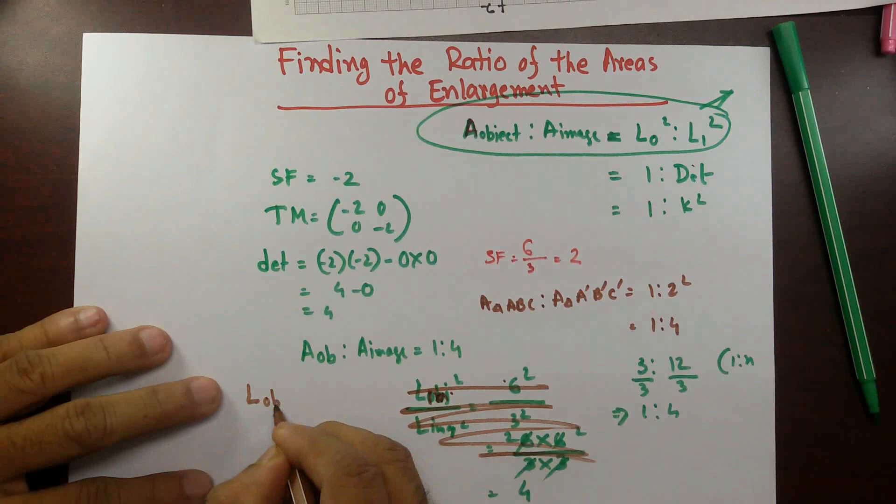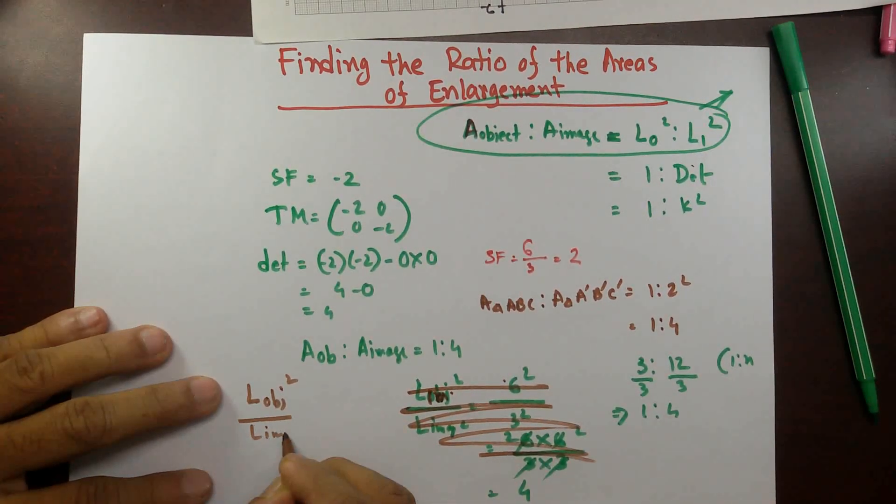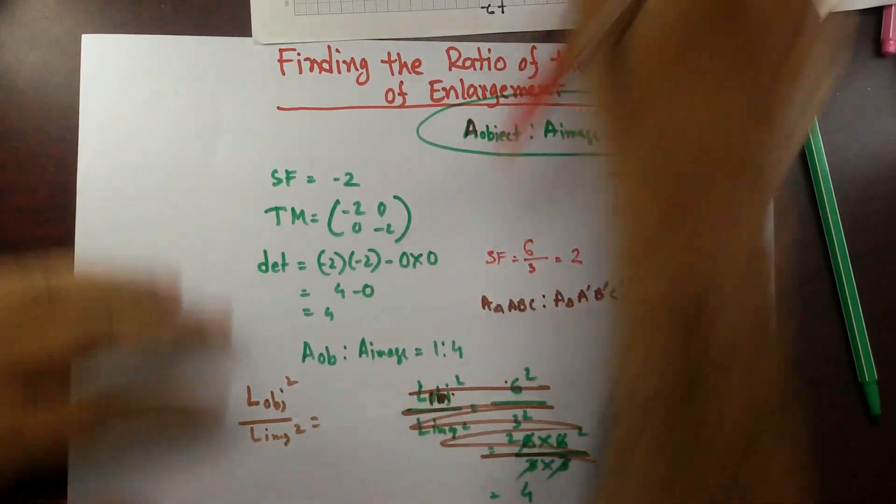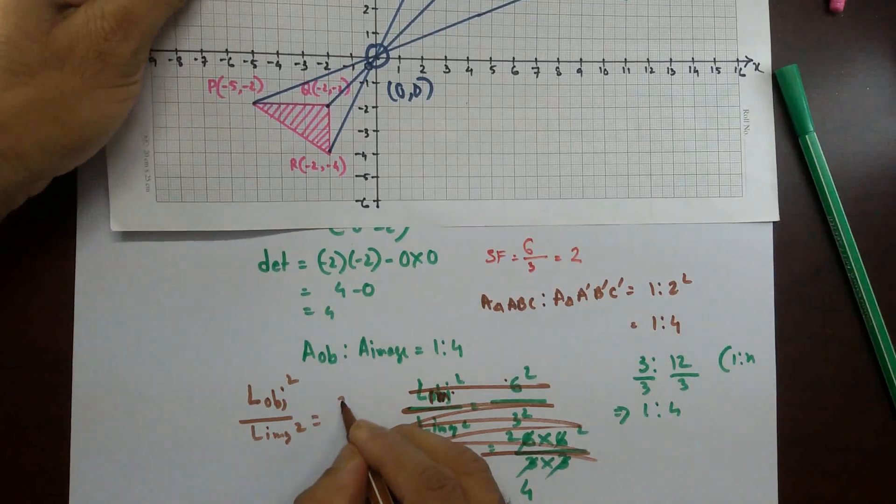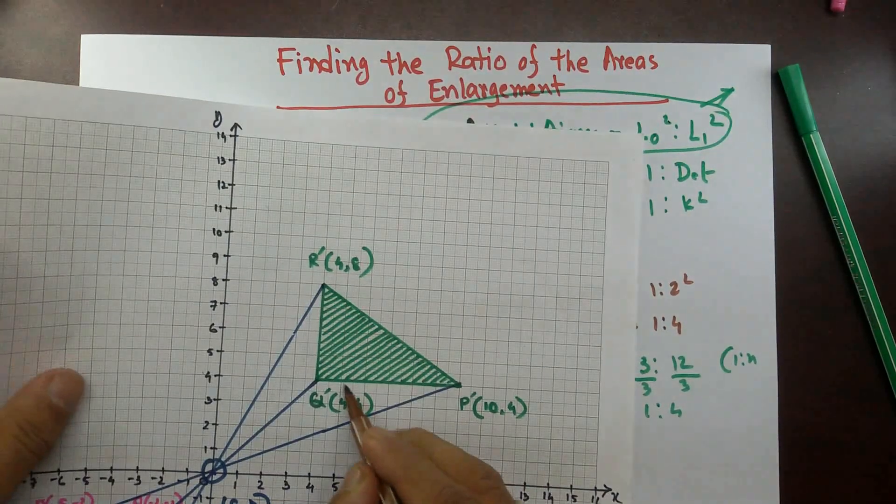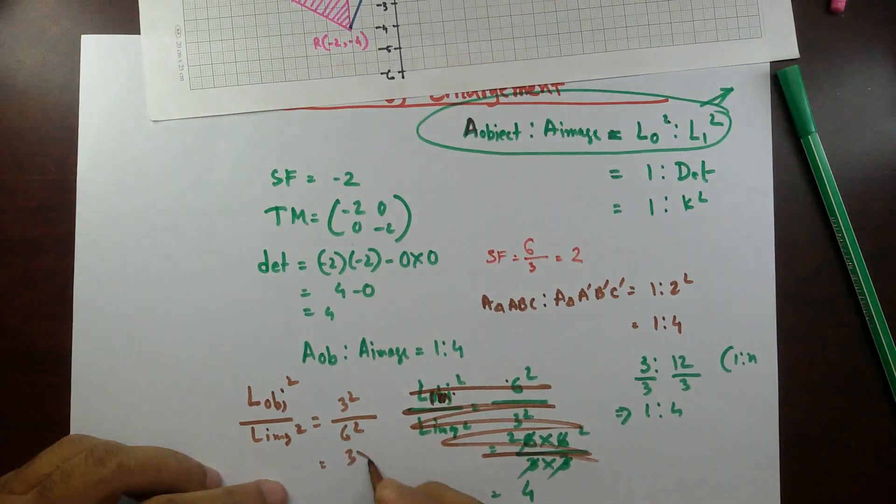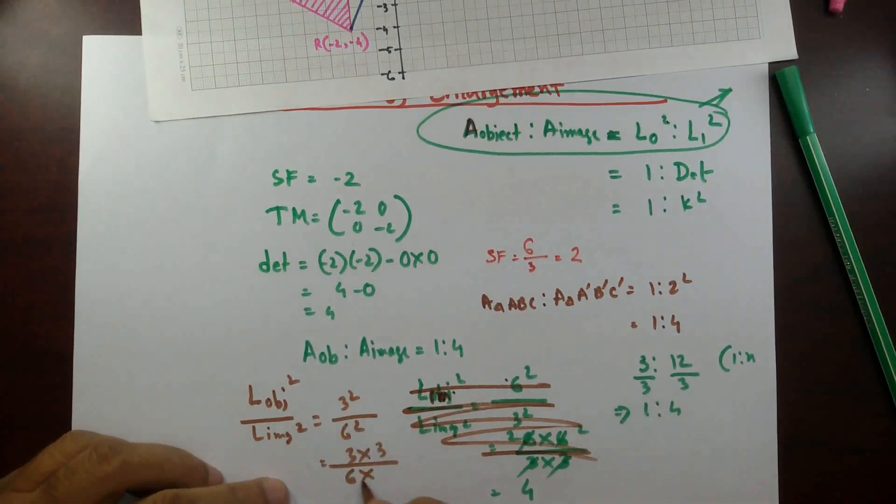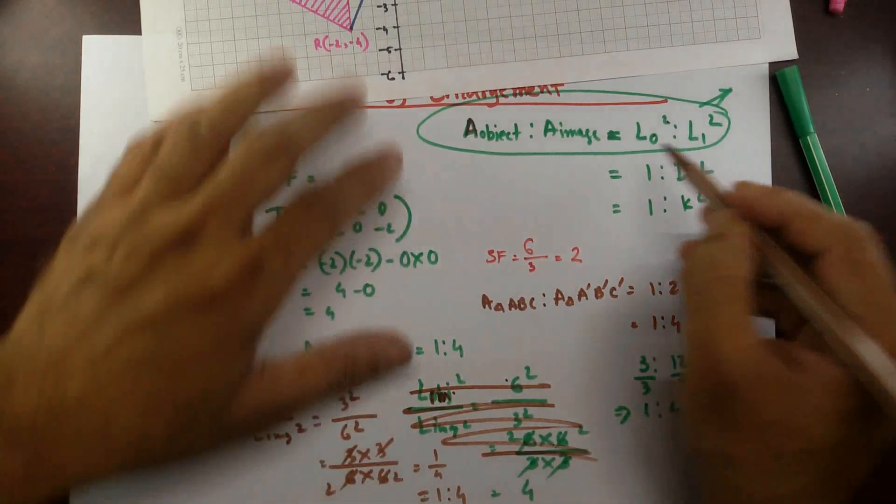Length of object squared over length of image squared. Let's look at the object here. 1, 2, 3. So that's 3 squared. And over here 1, 2, 3, 4, 5, 6, 6 squared. So it's going to be 3 times 3, 6 times 6, 3 cross out this, cross out that. So 1 by 4 or I can write down this fraction, 1 is to 4. Sorry about that.